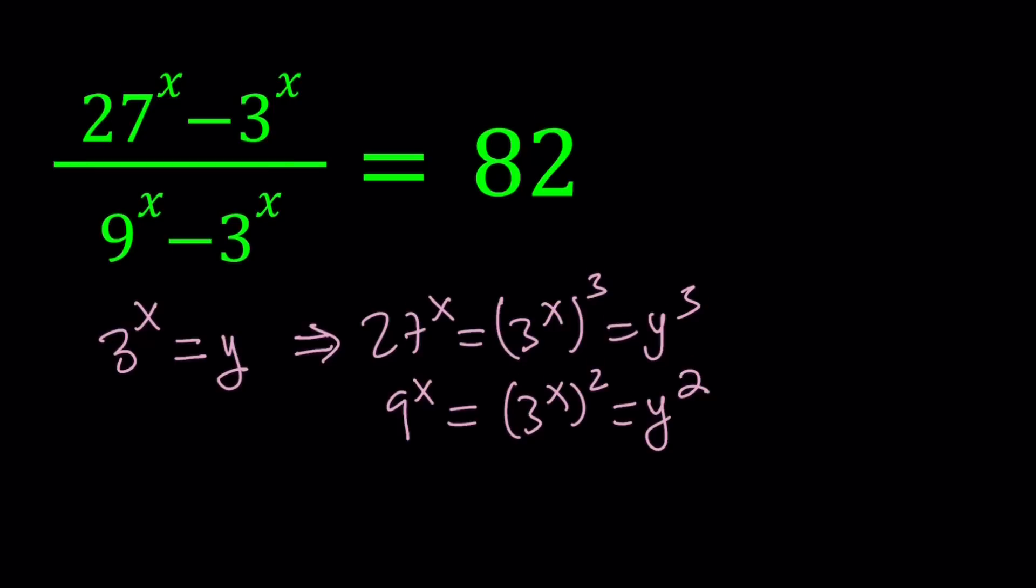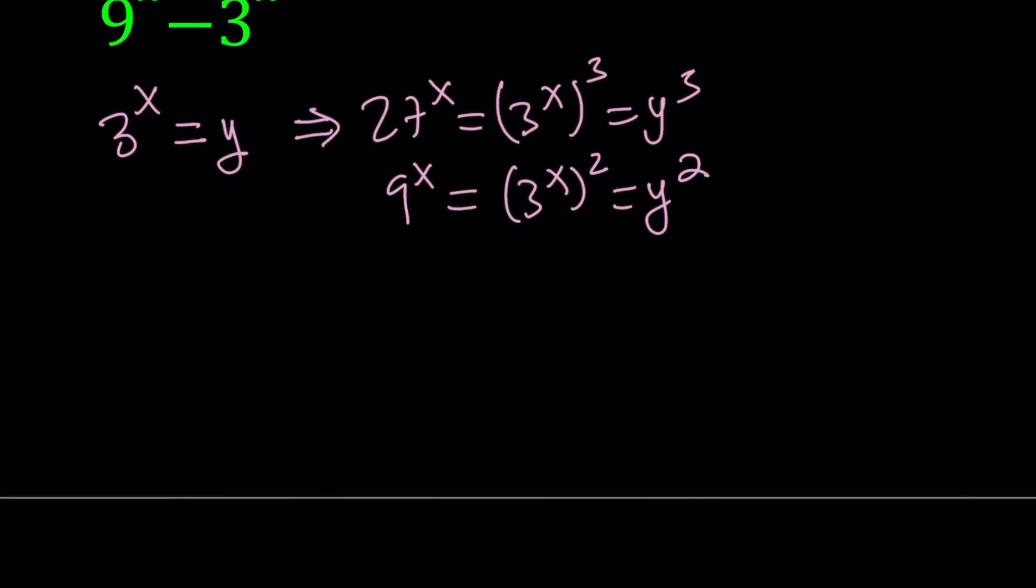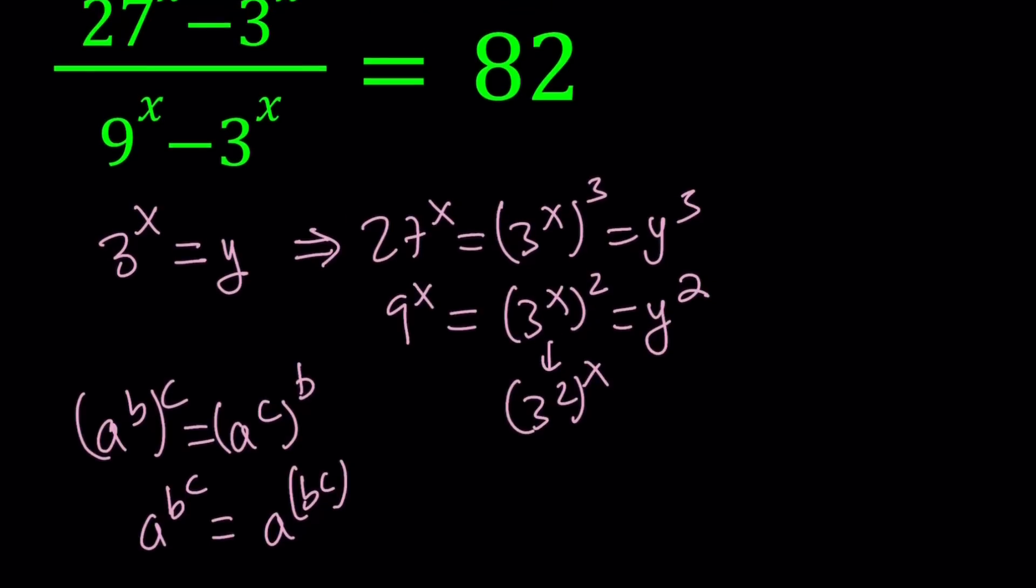Now the reason why we have 9 to the x equals y squared is because this is the same thing as 3 to the second to the power x. So when you are using the power of a power property, in other words, you have something like a to the power b to the power c, it is the same thing as a to the power c to the power b. And when we have b to the power c as an exponent, obviously we write it without the parentheses, and this means a to the power the quantity b to the power c.